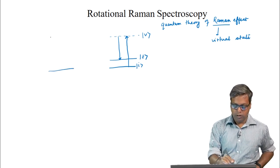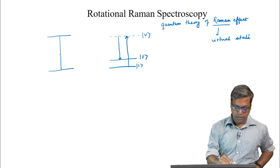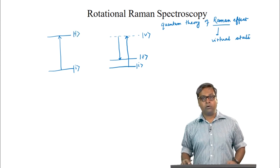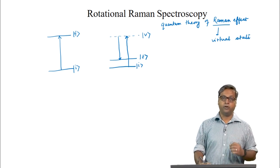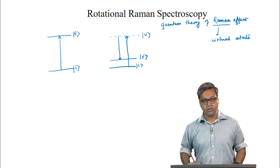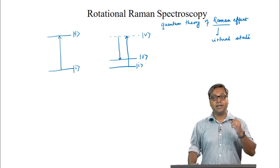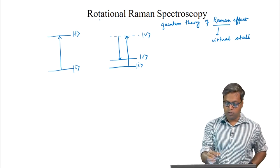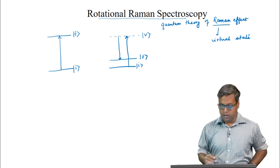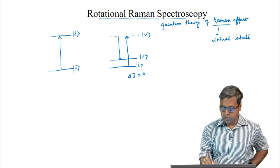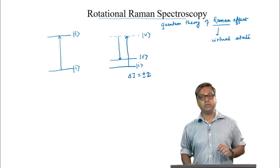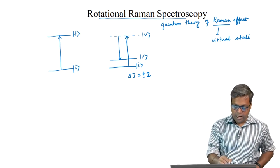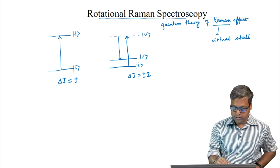Now if we compare this with a normal absorption process, then the transition happens from the initial to the final state. As the transition probabilities are different for an absorption process and a Raman process, we saw in the last lecture that the selection rule for rotational Raman spectroscopy is also different. For rotational Raman spectroscopy, the selection rule is delta J equals plus or minus 2, and this is in contrast with the corresponding selection rule for microwave spectroscopy, where we have delta J equals plus or minus 1.